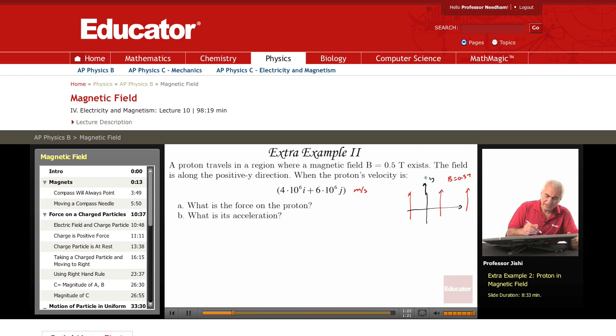So V, this is V. What is the force on the proton? The force on the proton is the force on a charged particle in a magnetic field, so it's Q V cross B.